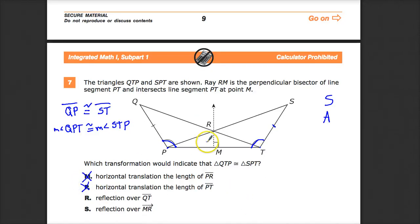A reflection over QT. So if I reflect here, this point probably goes somewhere over here. Again, it's like a bad fold. I don't know why that would help me.